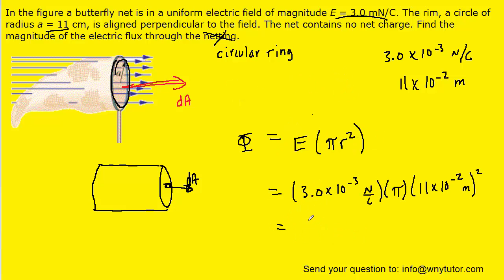And so when we work that out, we get approximately 1.14 times ten to the minus four. And then the unit of the electric flux is going to be a newton multiplied by a meter squared divided by coulombs. So this, indeed, is the correct answer.